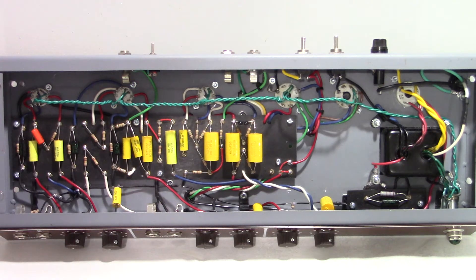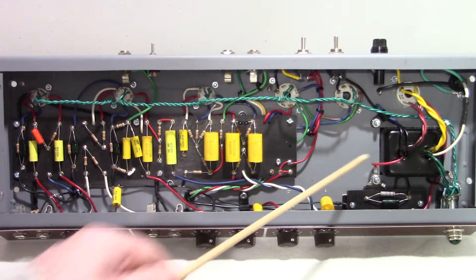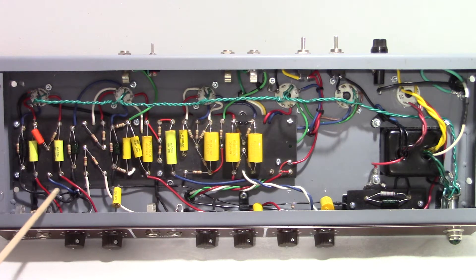So what I've got instead is the power supply elements run to this star ground here, and then the preamp, a little bit hard to see, but there's actually a preamp ground bus running back to the input jack.